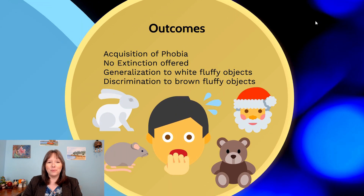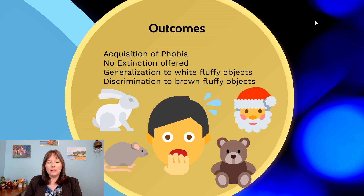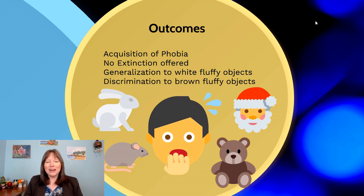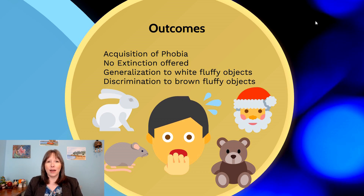This led to the acquisition of a phobia, and unfortunately one of the big problems with this study is that no extinction trials were offered. Little Albert was never allowed to extinguish this phobia. There's been lots of inquiry into what happened to Little Albert, where he went, and what kind of life he had going forward with this really salient phobia from a very young age.